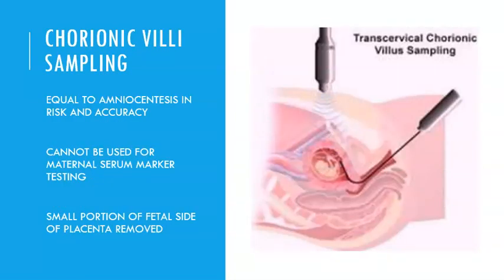Another test that can be done a bit earlier is chorionic villi sampling. Instead of withdrawing amniotic fluid, they use the chorionic villi — the little finger-like projections that come off the yolk sac, attach to the uterus, and become the placenta. Some of those fingerling projections are removed and tested. This can be done as early as around 10 weeks. If earlier genetic testing is needed, this can be used. It carries a slightly higher risk of spontaneous abortion than amniocentesis, but if necessary, it can provide earlier genetic information.